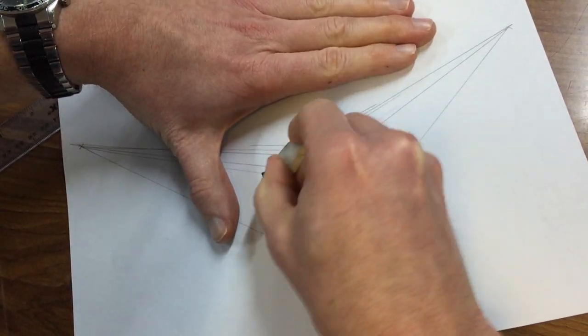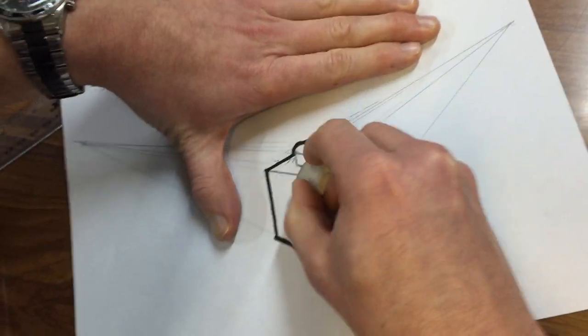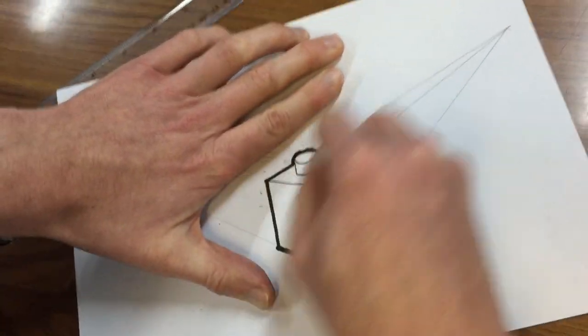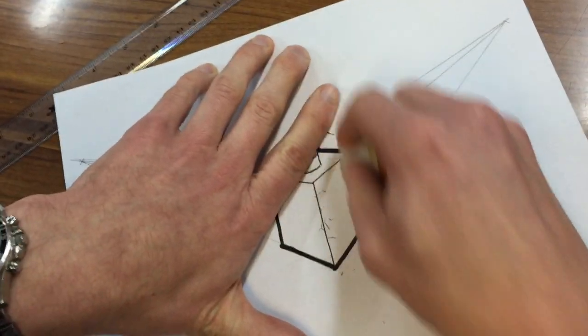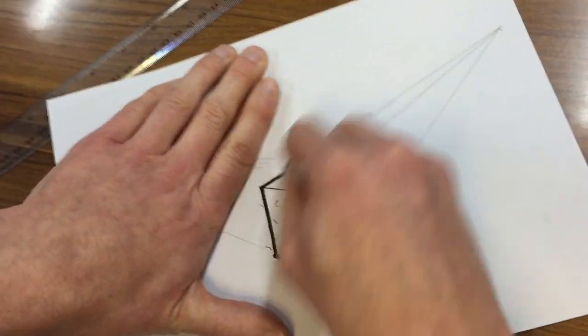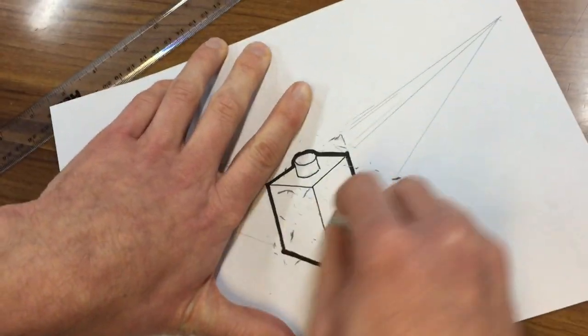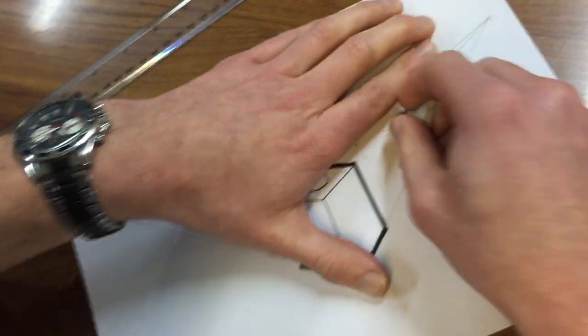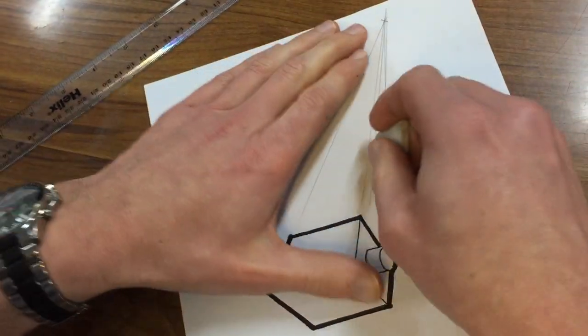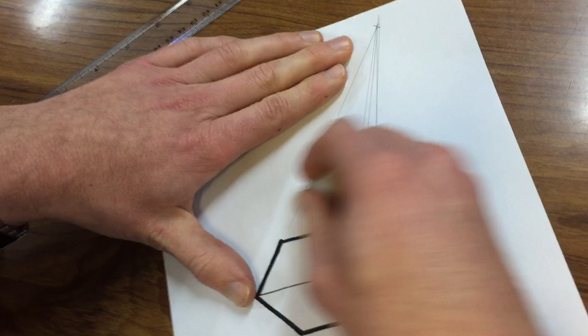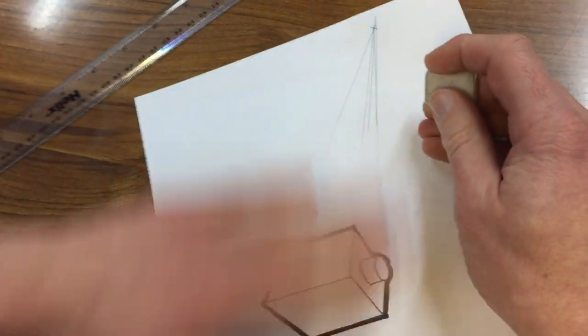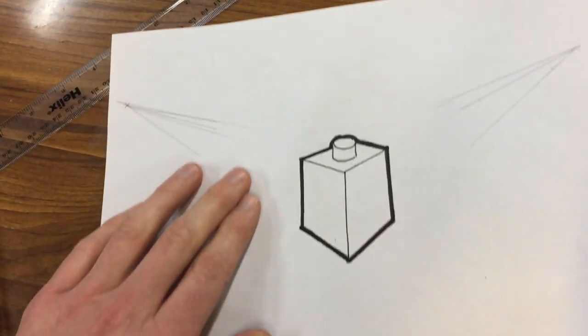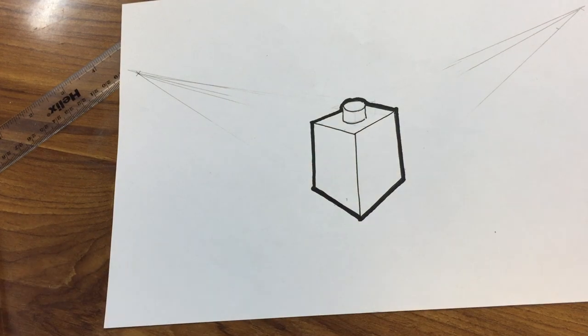Making sure the pen is dry, just erase—sorry for the camera wobble. This is where it pays earlier to not press too hard when you're using the pencil, because it'll be easier to erase. Right, I'll just leave the pencil lines for now just so you can get an idea of how it disappears into the distance.